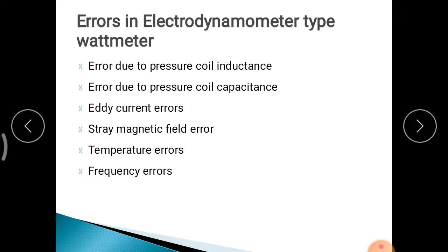Temperature errors occur because current flow produces a heating effect, which changes the resistance of components, altering instrument readings. To avoid this, low temperature coefficient materials such as manganin are used. Frequency errors occur because the supply frequency may vary slightly from 50 Hz — such variation changes the self-inductance of the coil, causing errors in readings. This covers construction, advantages, disadvantages, and errors of the Electrodynamometer type Wattmeter.